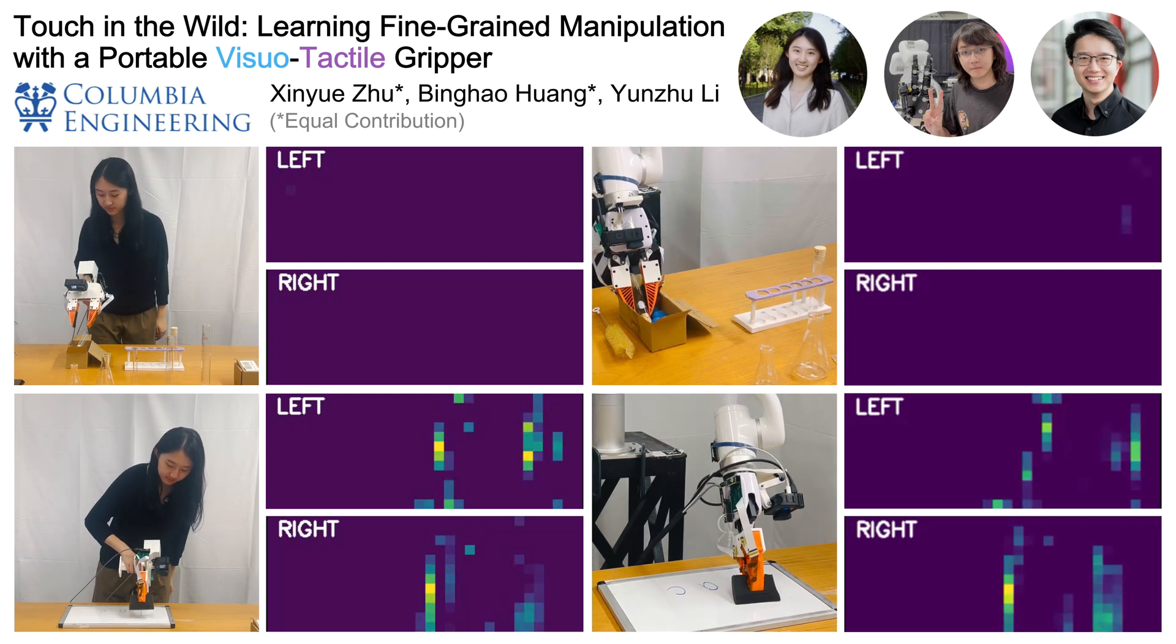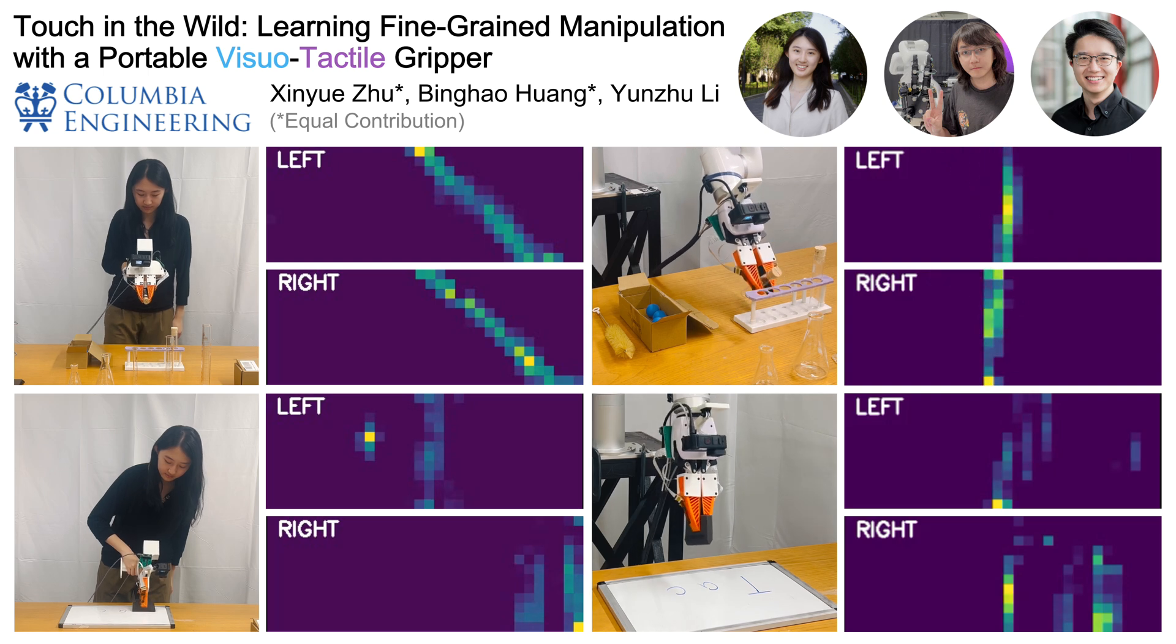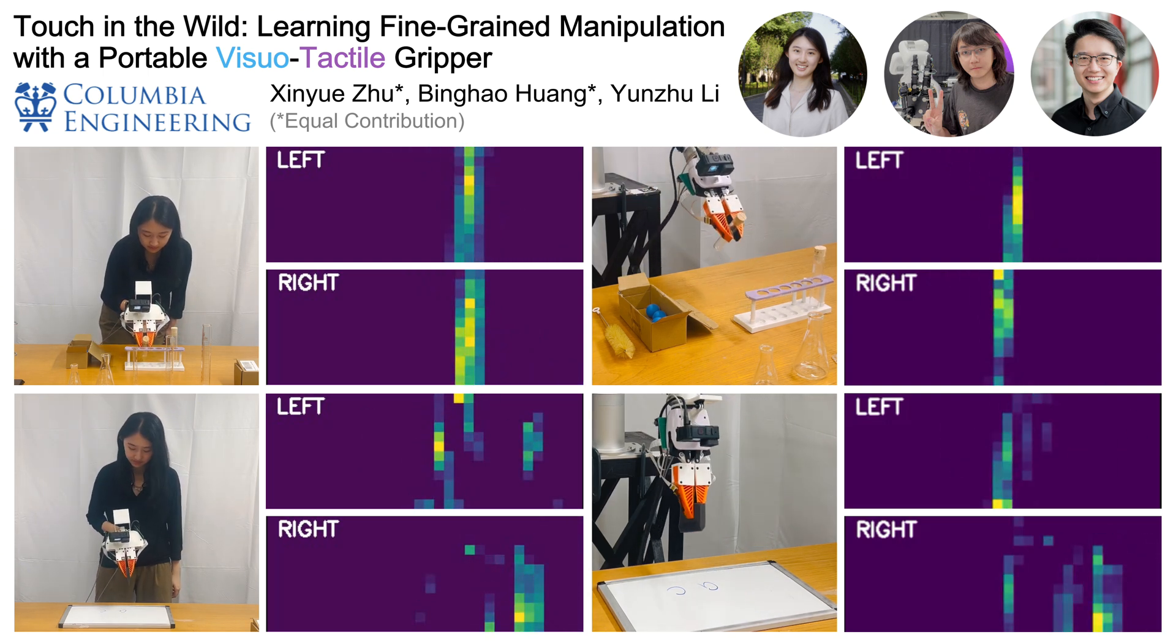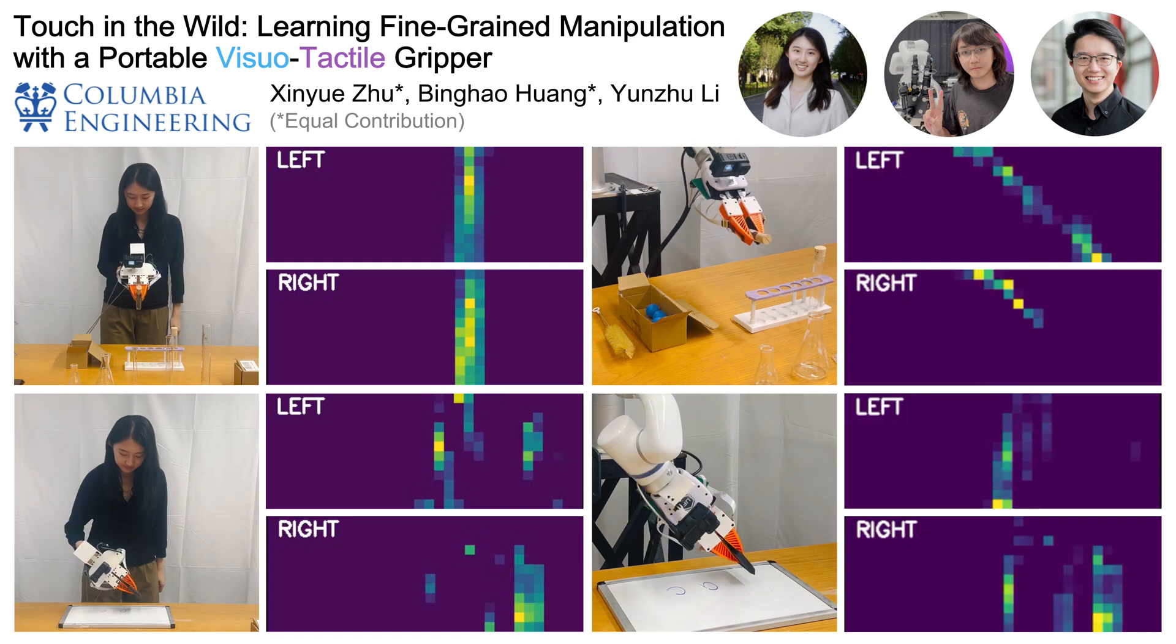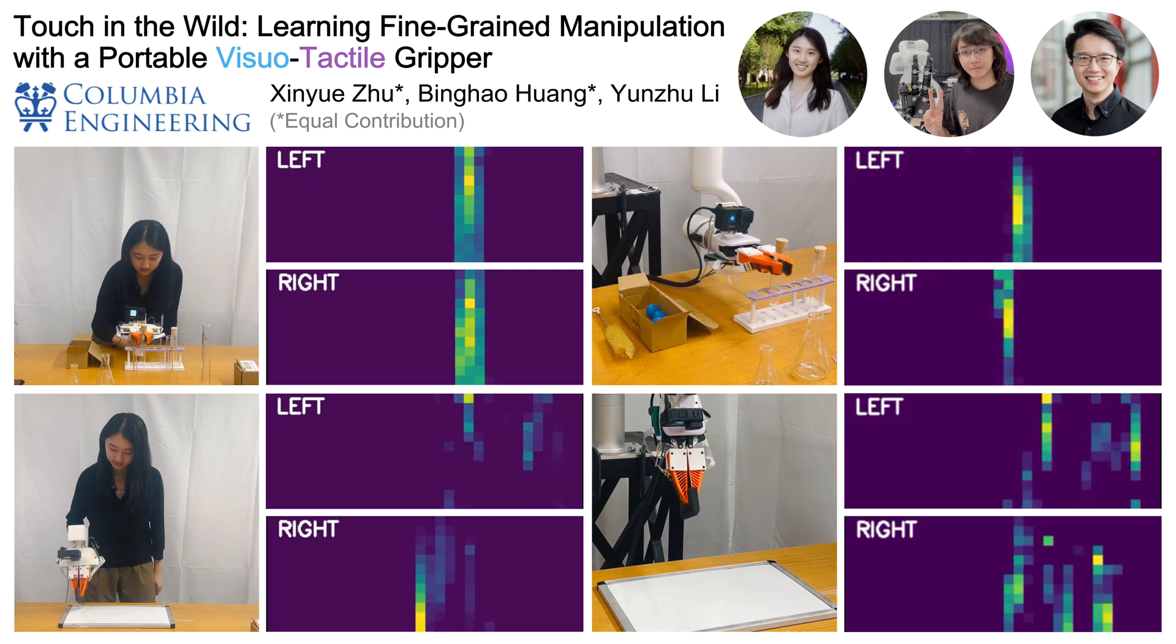This video introduces Touch in the Wild, learning fine-grained manipulation with a portable visual tactile gripper. We present a lightweight handheld visual tactile gripper that enables in-the-wild data collection and a learning algorithm that makes use of this data to improve fine-grained robotic manipulation.